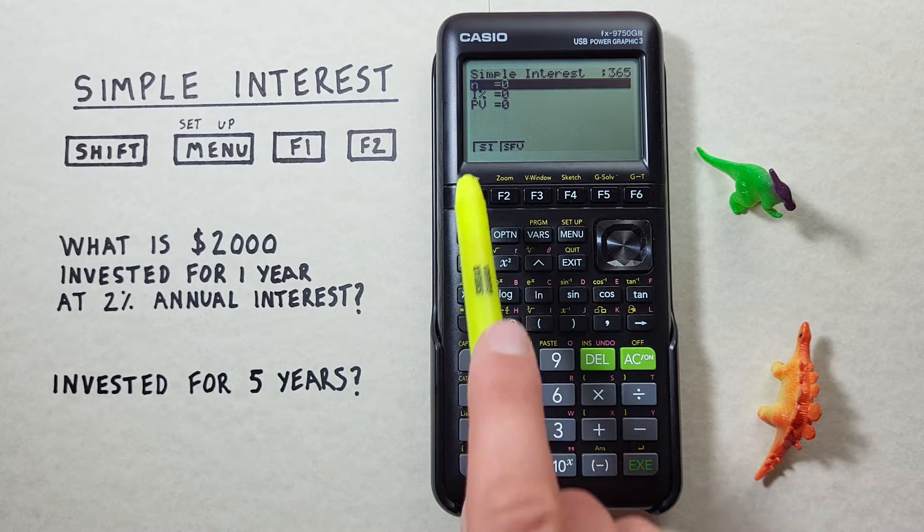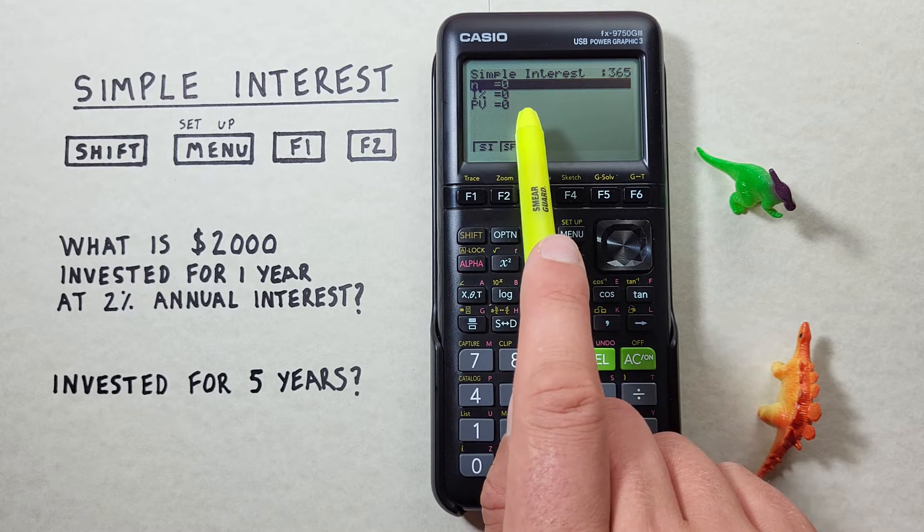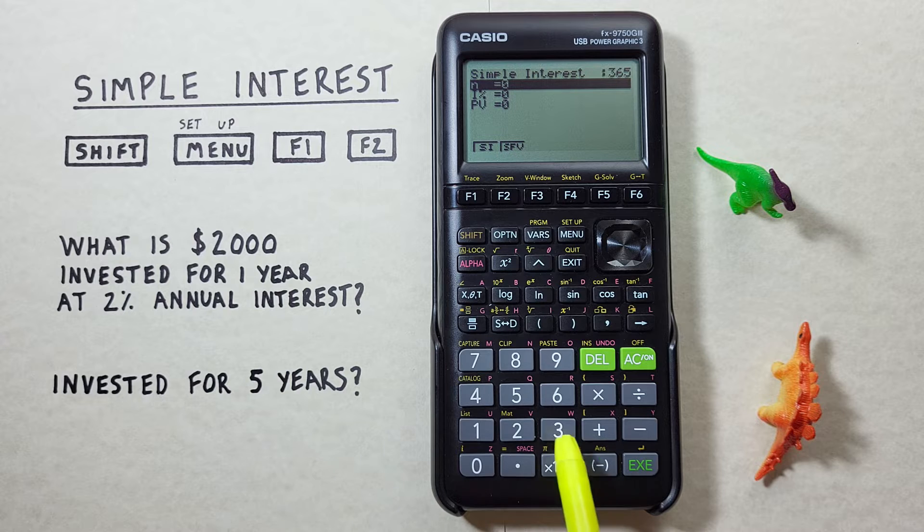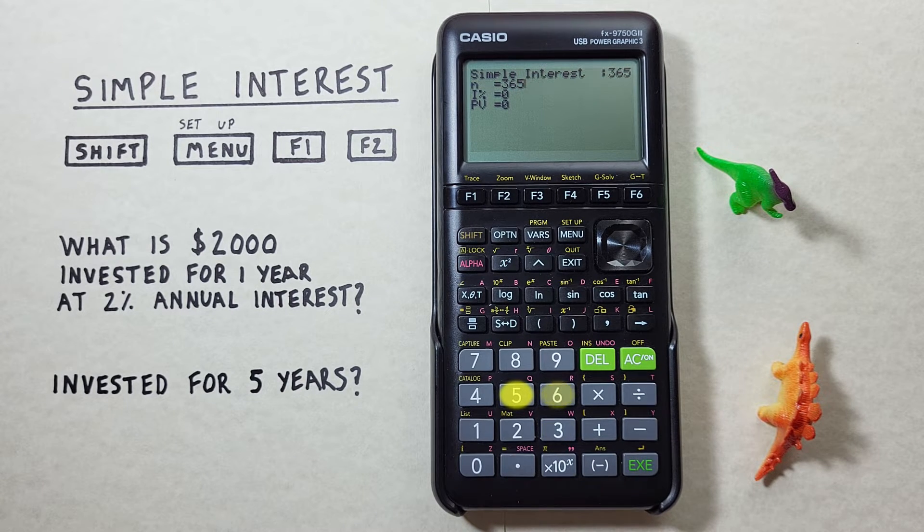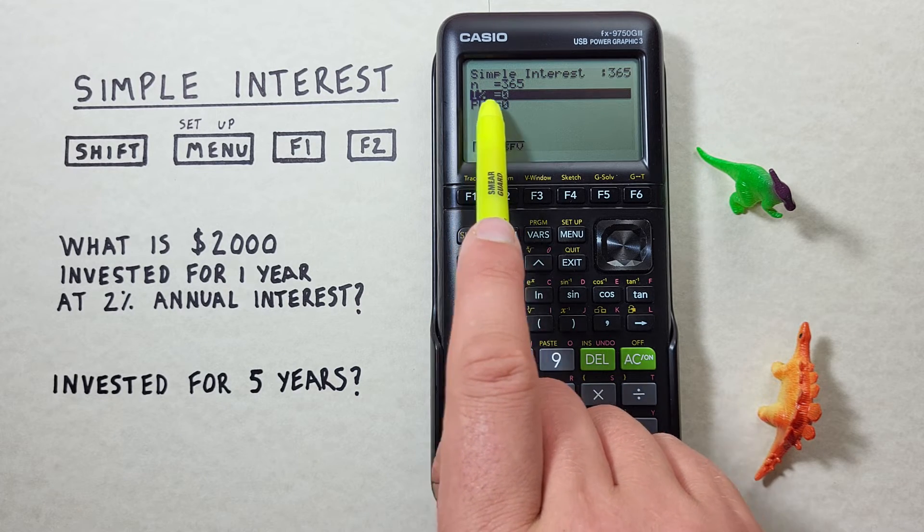Our first variable here is n which for simple interest is the number of days. For our first example we're doing one year so we'll enter 365, hit EXE and now we're at I% or interest percent.